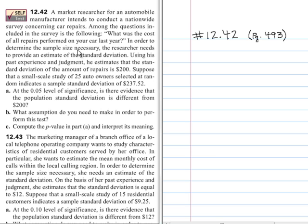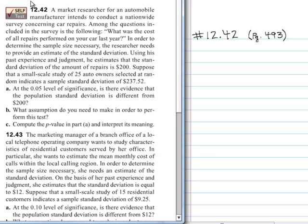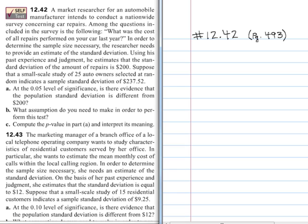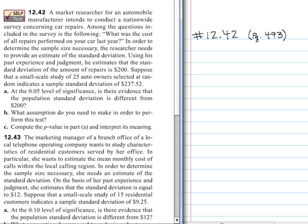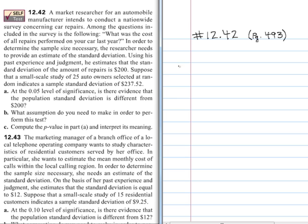In this problem, the researcher wants to estimate the sample standard deviation because they're trying to decide on the sample size. If you remember the sample size calculation, it's n equals z squared times the population standard deviation squared divided by the error squared, and he's going to estimate this value. The claim is that the population standard deviation is equal to $200.